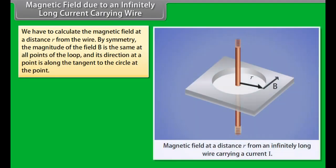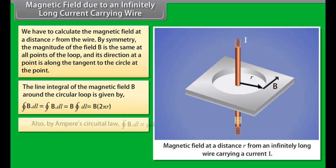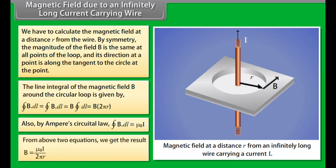Magnetic field due to an infinitely long current carrying wire: We calculate the magnetic field at a distance R from the wire. By symmetry, the magnitude of field B is the same at all points of the loop, and its direction is along the tangent to the circle at the point. The line integral of B around the circular loop is given by B times 2 pi R. By Ampere's Circuital Law, closed integral of B dot dL equals mu naught I. From these two equations, we get B equals mu naught I divided by 2 pi R.